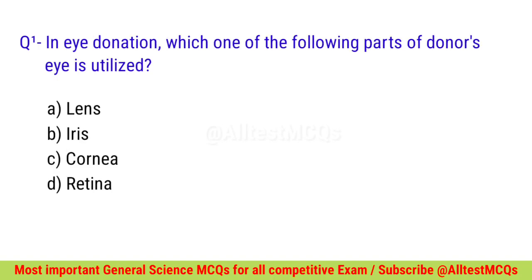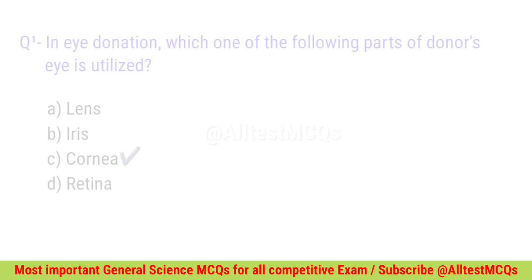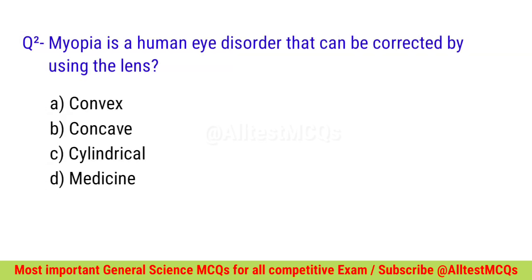Question number one: In eye donation, which one of the following parts of the donor's eye is utilized? Correct option is C — Cornea. Question number two: Myopia is a human eye disorder that can be corrected by using which lens? Correct option is B — Concave lens.